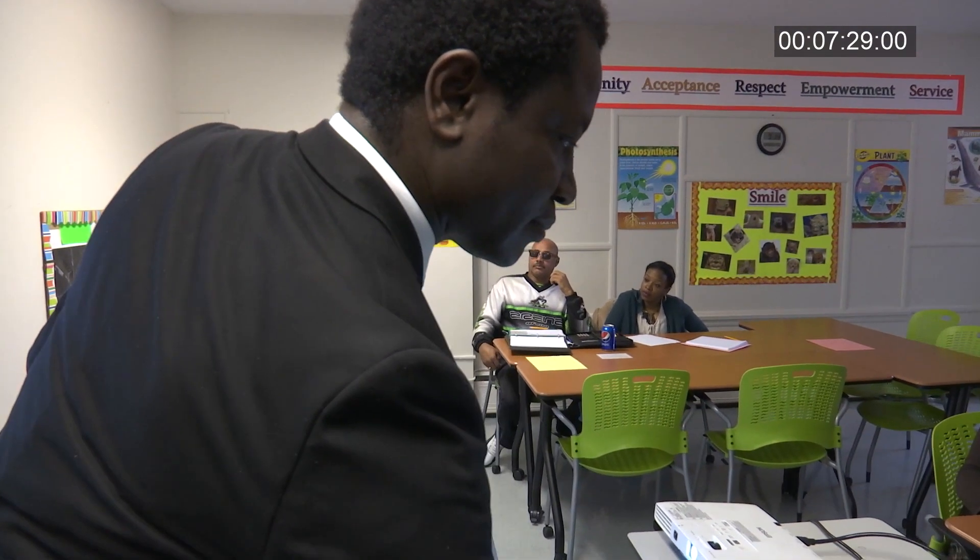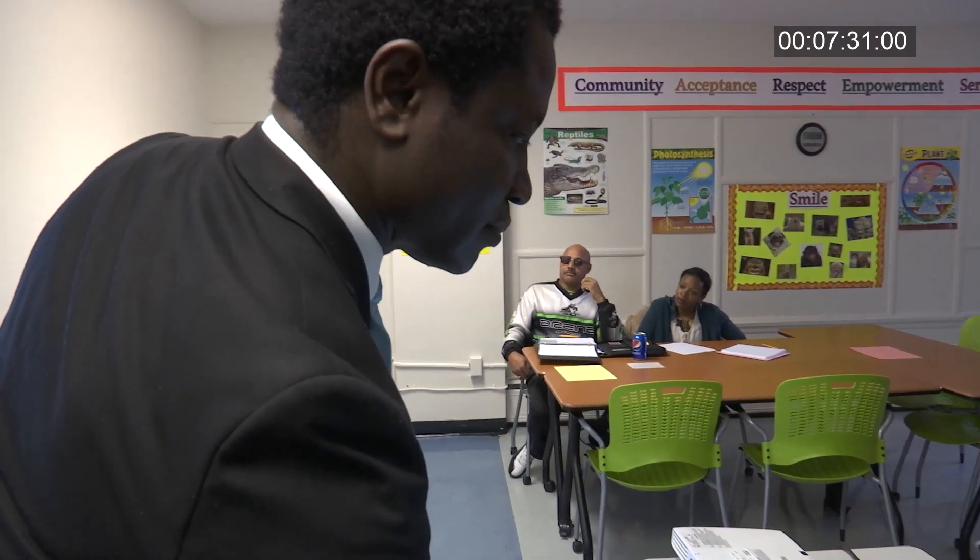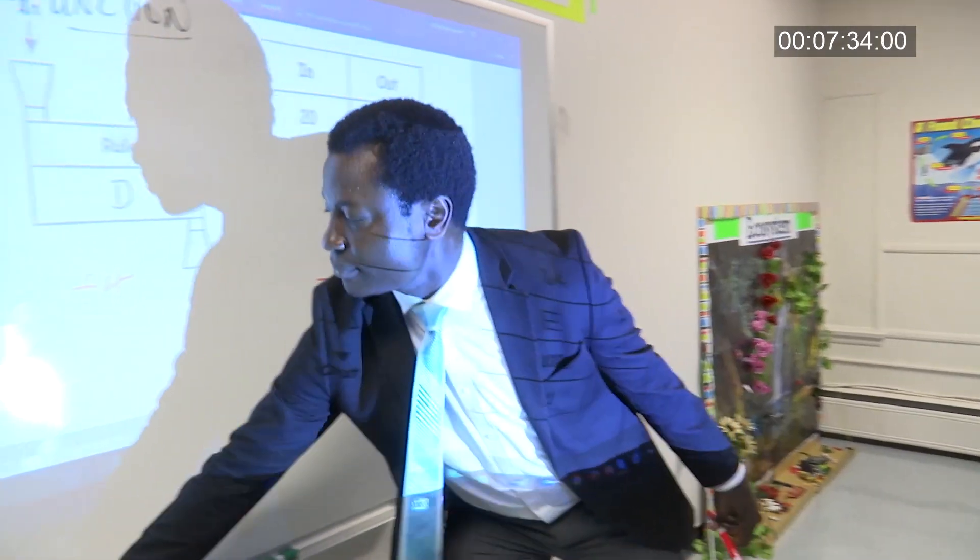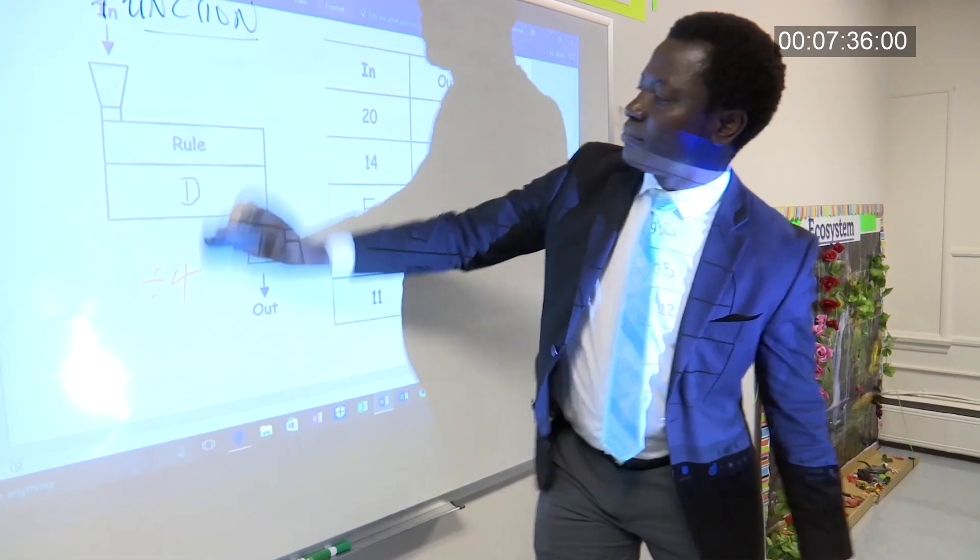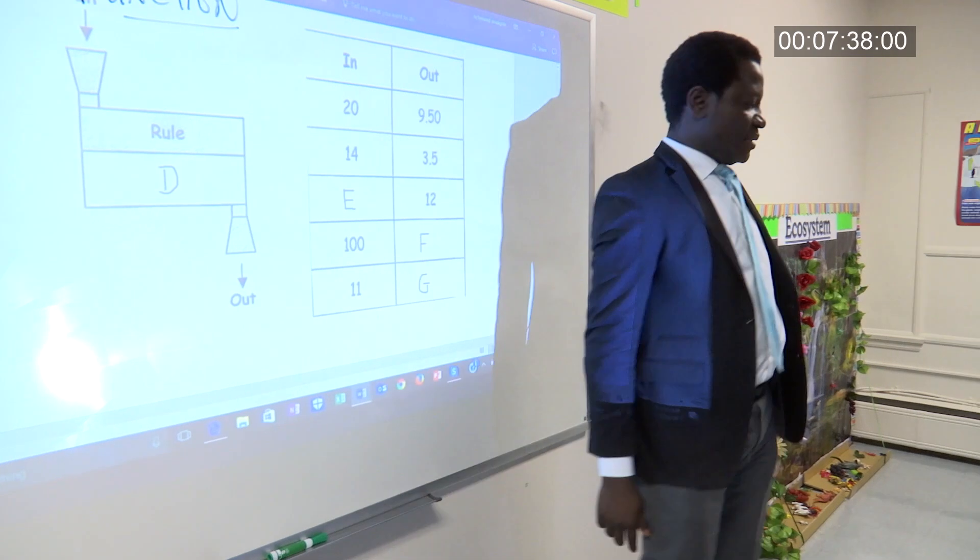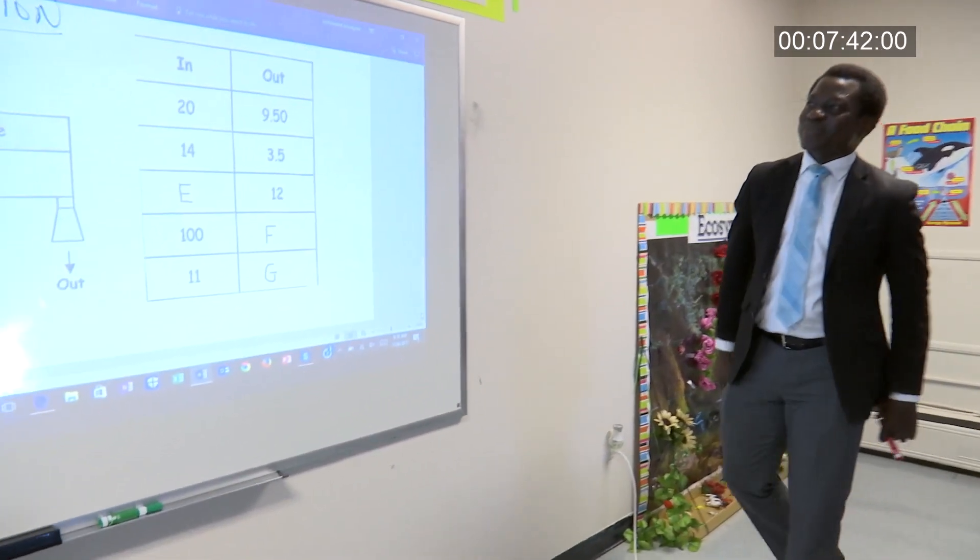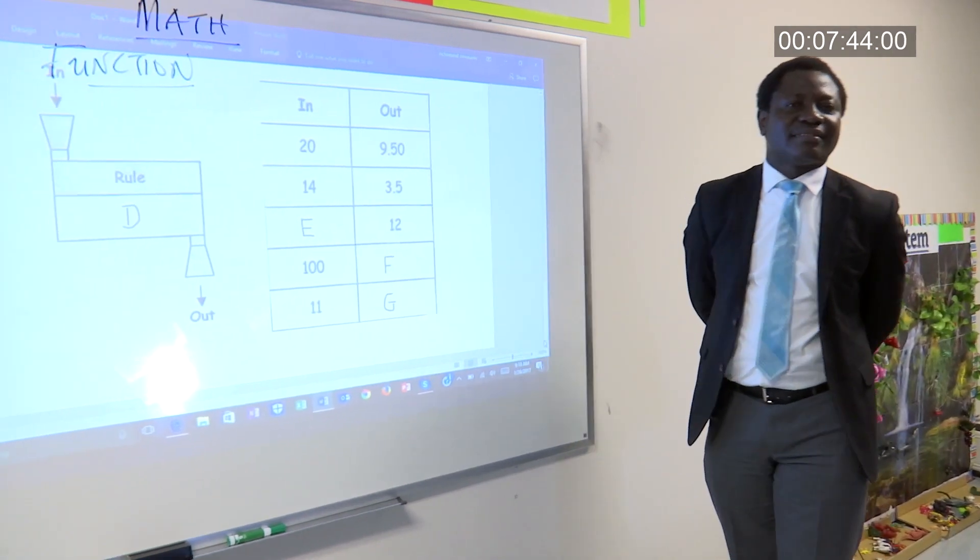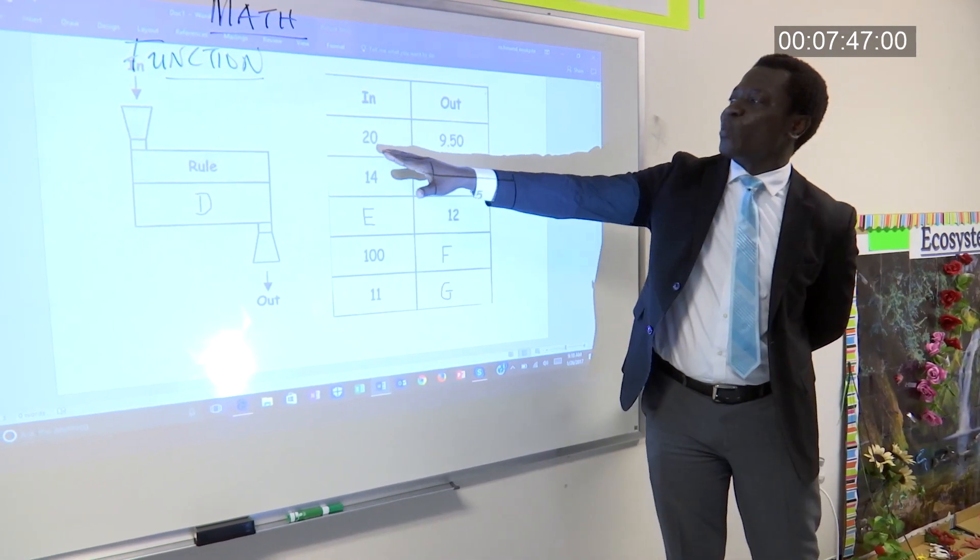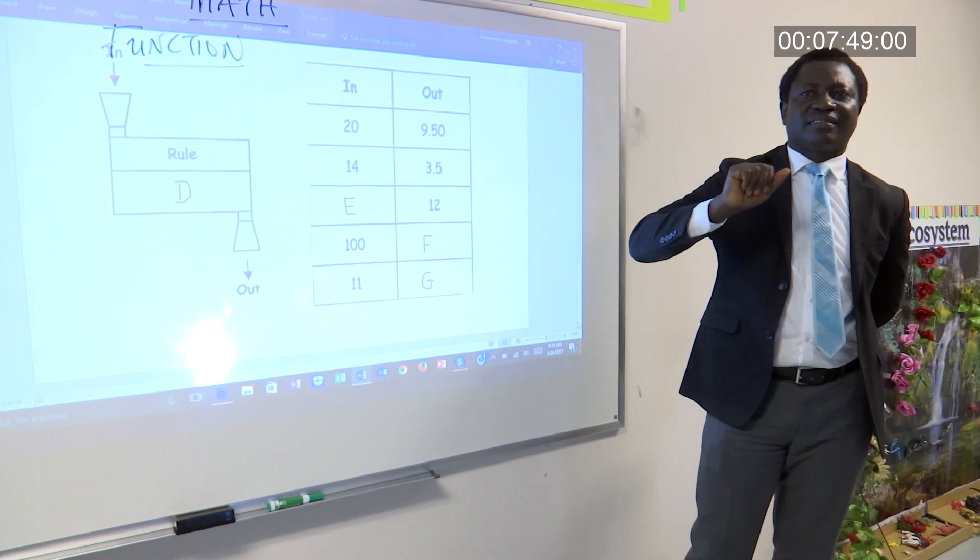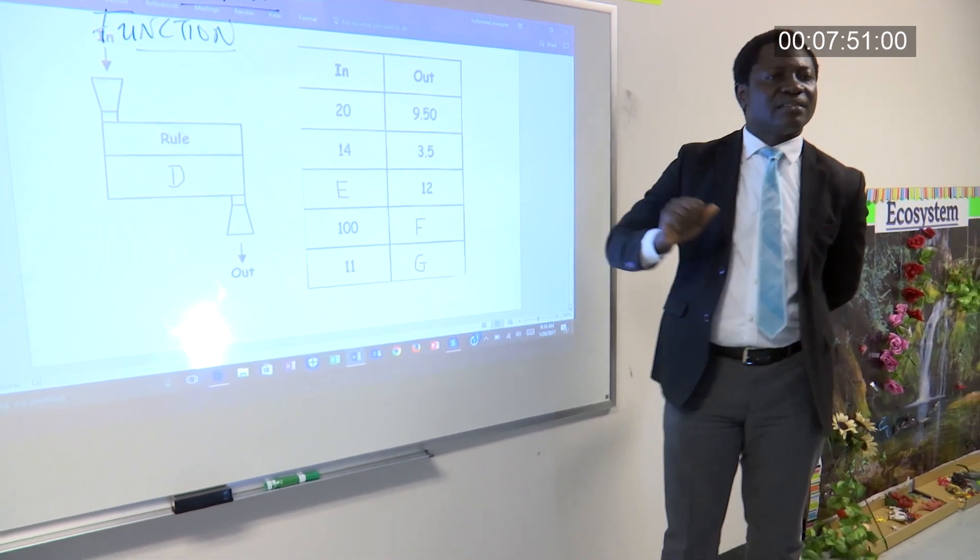Okay. Let's look at this one. Okay. That's the one we get, right? Right here. Yeah. That's the one we get. This is another function machine. If you put in 20, let's say $20, you get $9.50.